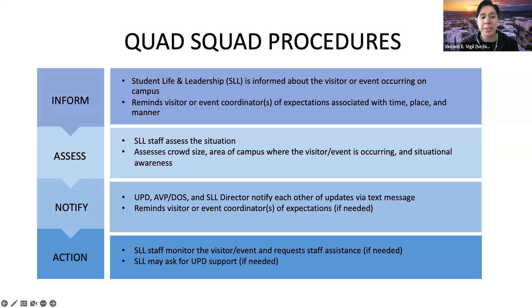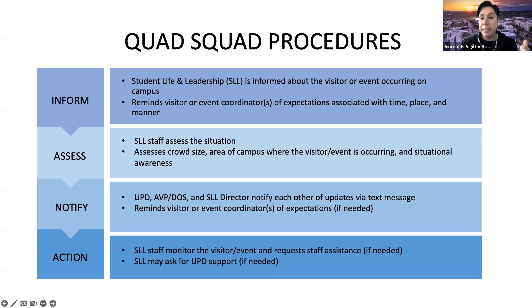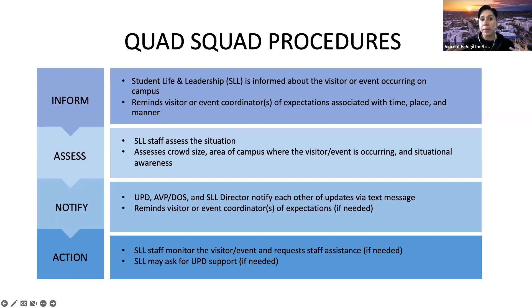When it comes to managing the Quad Squad, we use four different techniques. First, we inform: Student Life and Leadership is informed about a visitor that comes on campus — sometimes we get a phone call or someone stops by the office. At that time, we have someone from the department go talk to that visitor and remind them of certain expectations regarding time, place, and manner. Then we assess the situation: staff will go out, look at the crowd, assess the size, assess where the area is, and look at the overall situation.